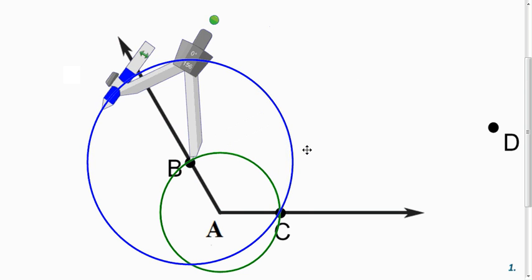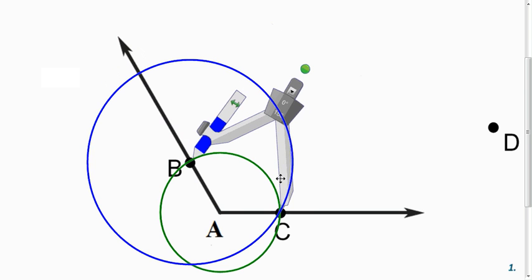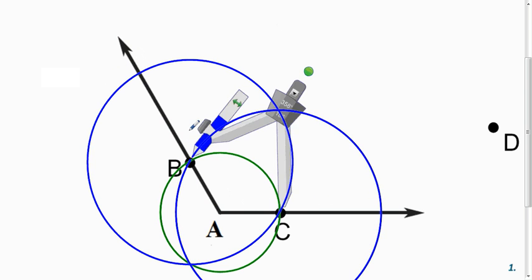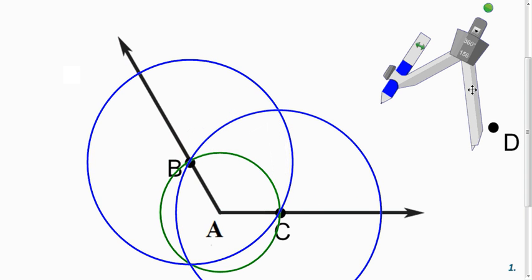Now, keeping the compass the same size—it's very important that you don't change the size right now—you're going to move it over to the other intersection point C and do the same thing. We want to know where do those second two circles cross? Well, they cross in two places.